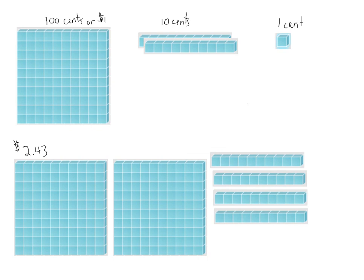So there's one dollar right here, and another dollar here. All of these together give us forty cents because this is ten cents, ten cents, another ten cents, and a final group of ten cents. So two dollars, forty cents.